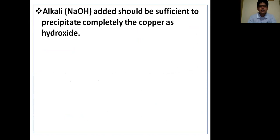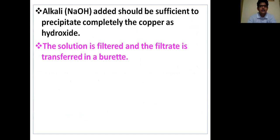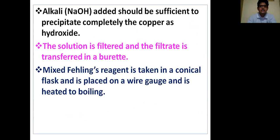The NaOH added should be sufficient to precipitate completely the copper as hydroxide. The solution is filtered and the filtrate is transferred in a burette. Mixed Fehling reagent is taken in a conical flask, placed on a wire gauge, and heated to boiling.